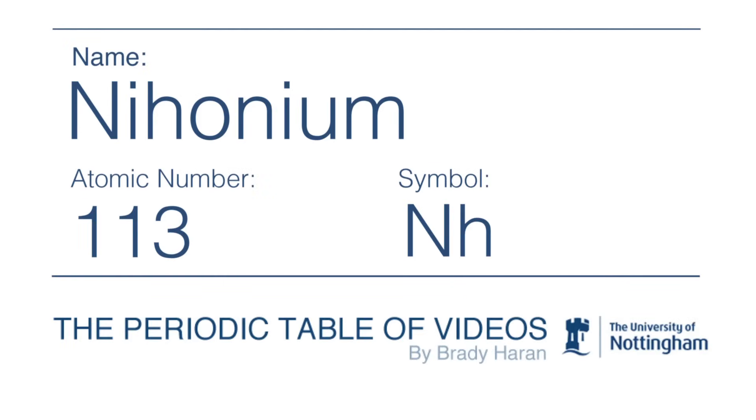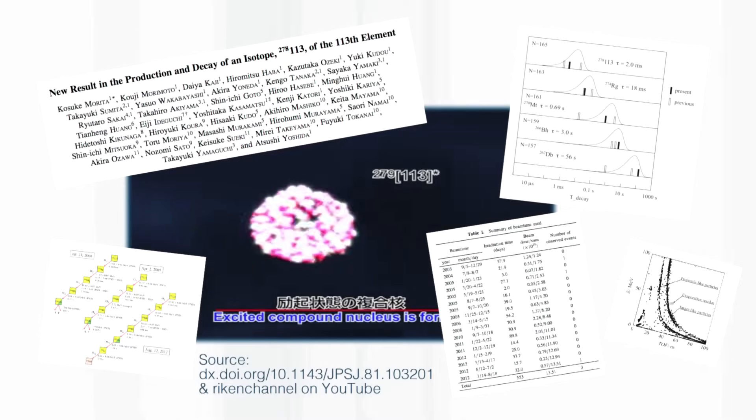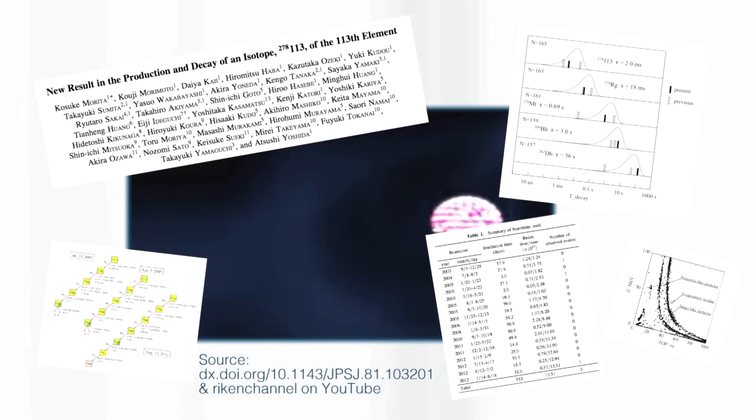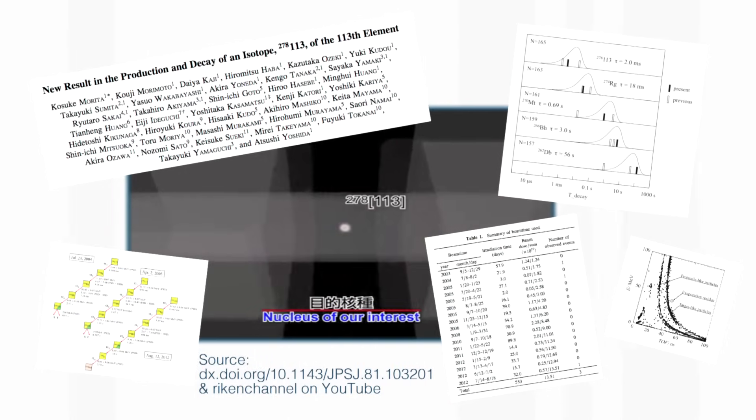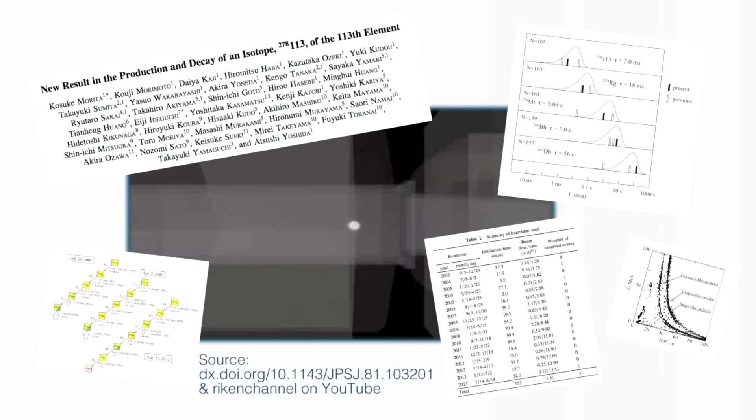Element 113 is the only one I've discussed with an ambassador. In fact, I've discussed it with both the old and new Japanese ambassadors to London, because element 113 is the first element to be definitely synthesized in Japan.